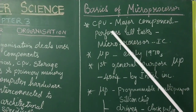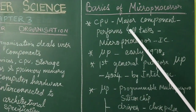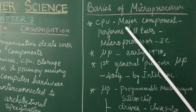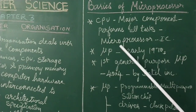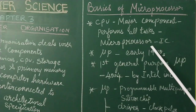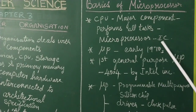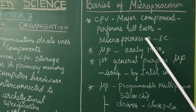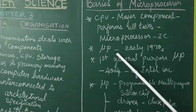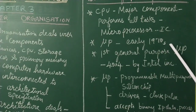Next we will see about basics of the microprocessor. We all know that in the first lesson we learned that CPU is the major component of the computer and it does all the tasks. The microprocessor is also known as an integrated circuit. This microprocessor is CPU, and it was developed during the early years of the 1970s.